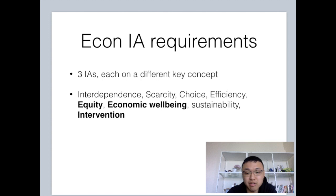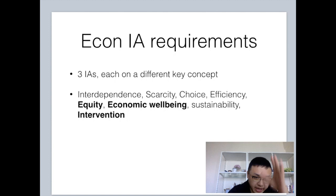Under the new Econ syllabus, you still need to do three IAs just like before, but now each of your IAs needs to be on a different key concept. There are eight key concepts: interdependence, scarcity, choice, efficiency, equity, economic wellbeing, sustainability, and intervention.